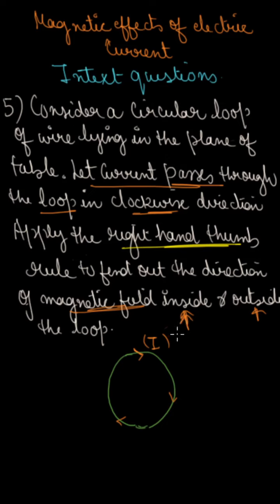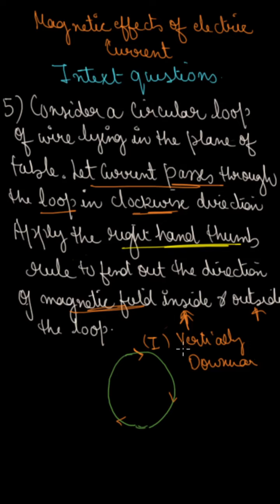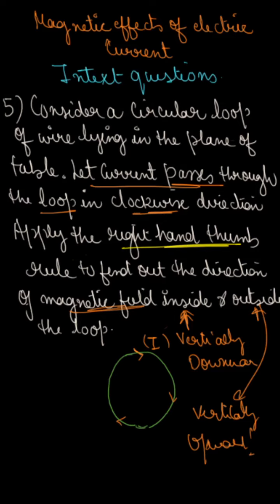So inside the loop, the magnetic field will go vertically downward — it's a downward direction. And when you look outside the loop, the magnetic field is vertically upward. So this question is about visualizing the direction of the magnetic field using the right-hand thumb rule.